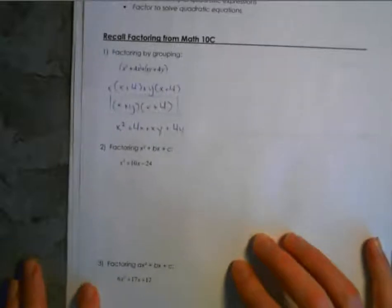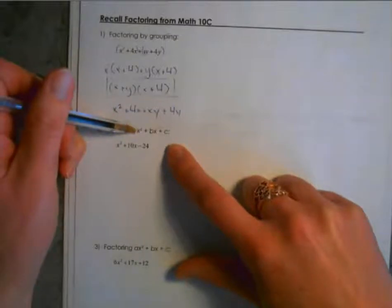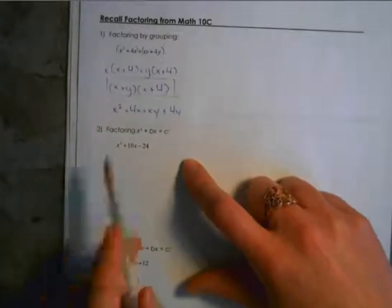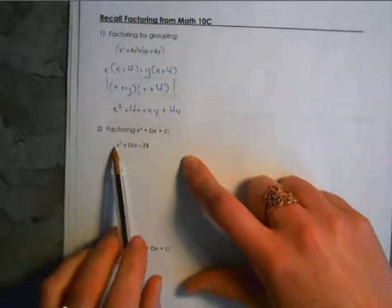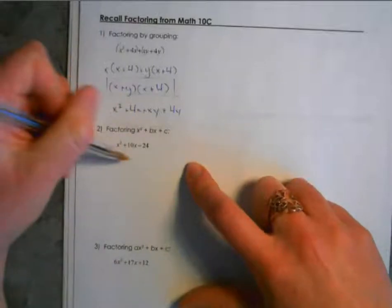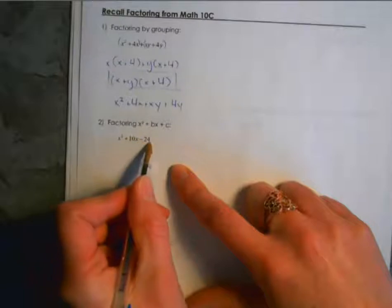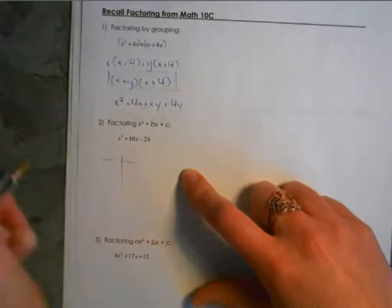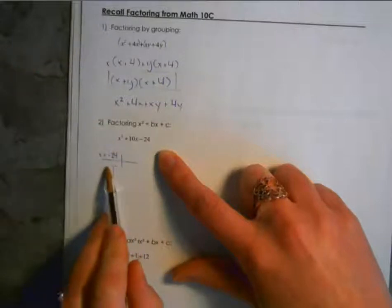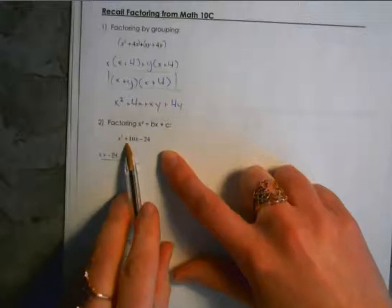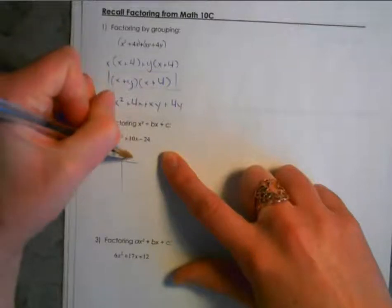You probably won't be using factoring by grouping very much in 20-1, but it's good to remember it's a possibility. The next one is factoring trinomials, looking at x squared plus bx plus c. This is where technically you do still have an a value, but remember if you don't see a number out front, that invisible a value is just 1.